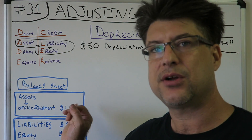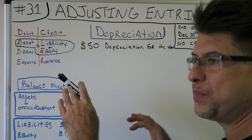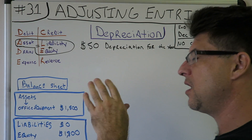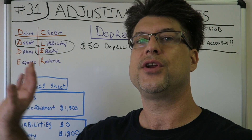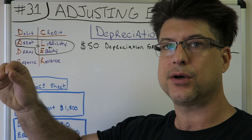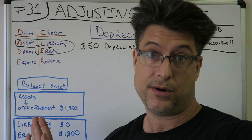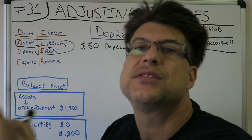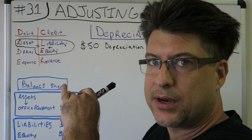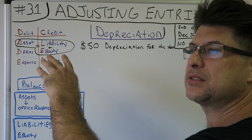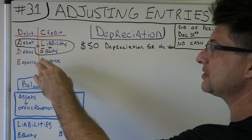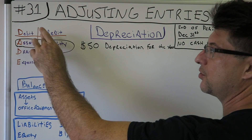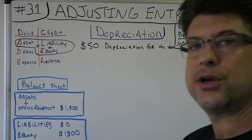What is depreciation? Let's say the office equipment is a printer — an $1,800 printer that's going to last a long time. You have it on as an asset. Now if you bought paper for the printer, you'd run through that in a couple months, so you just expense it right away. But the printer lasts for years, so you're going to expense it a little every year.